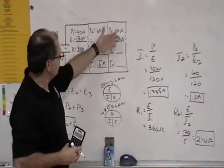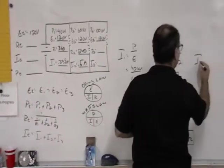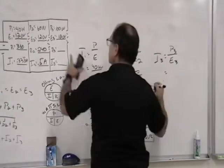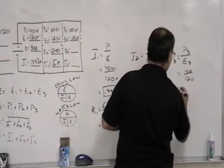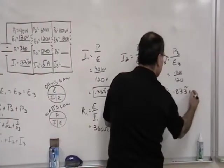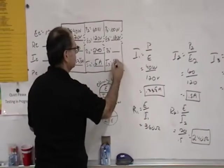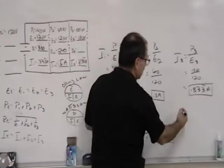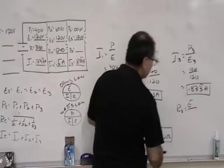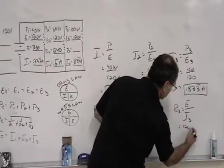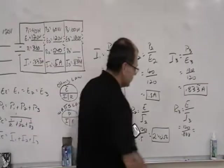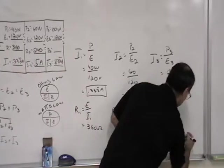Now we're going to do the same process for the third resistor. So I3 is equal to P3 divided by our voltage at 3, so 100 watts divided by 120 volts, 0.833 repeating amps. And the same thing for our last resistor, it would be the voltage at that resistor divided by this current, so 120 divided by 0.833 gives me 144 ohms.